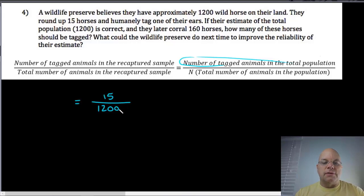The difference that I thought about before the video is from now on we should write the units, so 15 tagged to 1200 total. If their estimate of the population 1200 is correct, and they later corral...